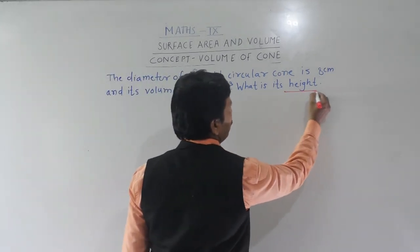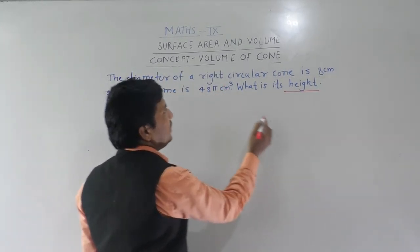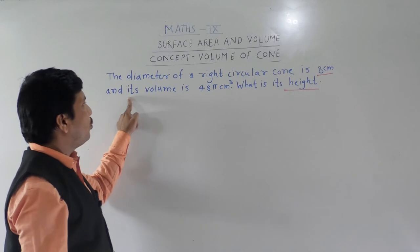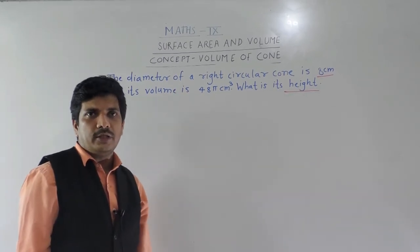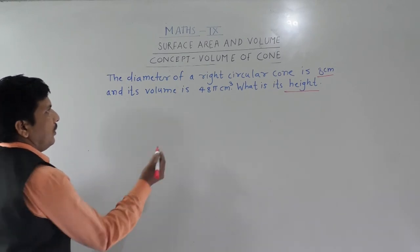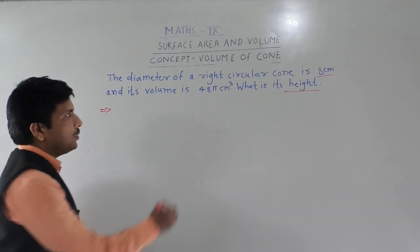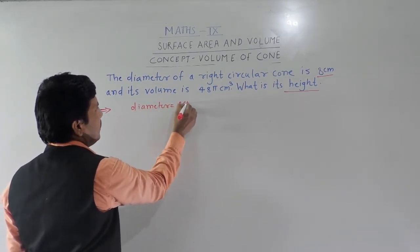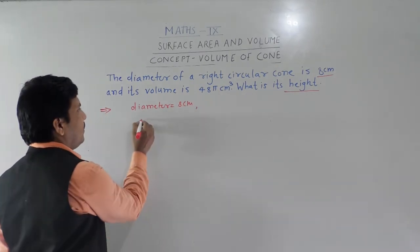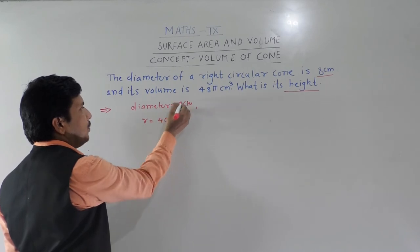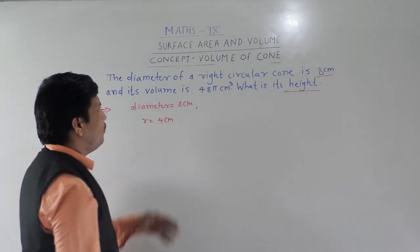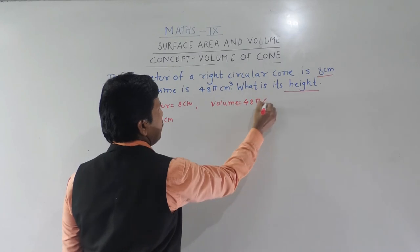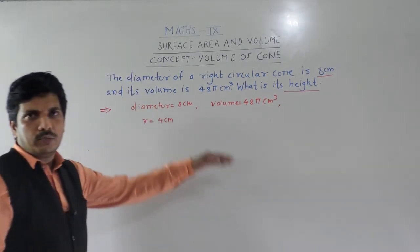We have to find the height of the cone. What is given? The diameter of a right circular cone is 8 centimeters, so we can easily find its radius. The volume is 48 pi cubic centimeters. So three things are given and we have to find the height. Diameter is 8 centimeters, so radius r equals 4 centimeters — half of the diameter. Volume is 48 pi cubic centimeters.